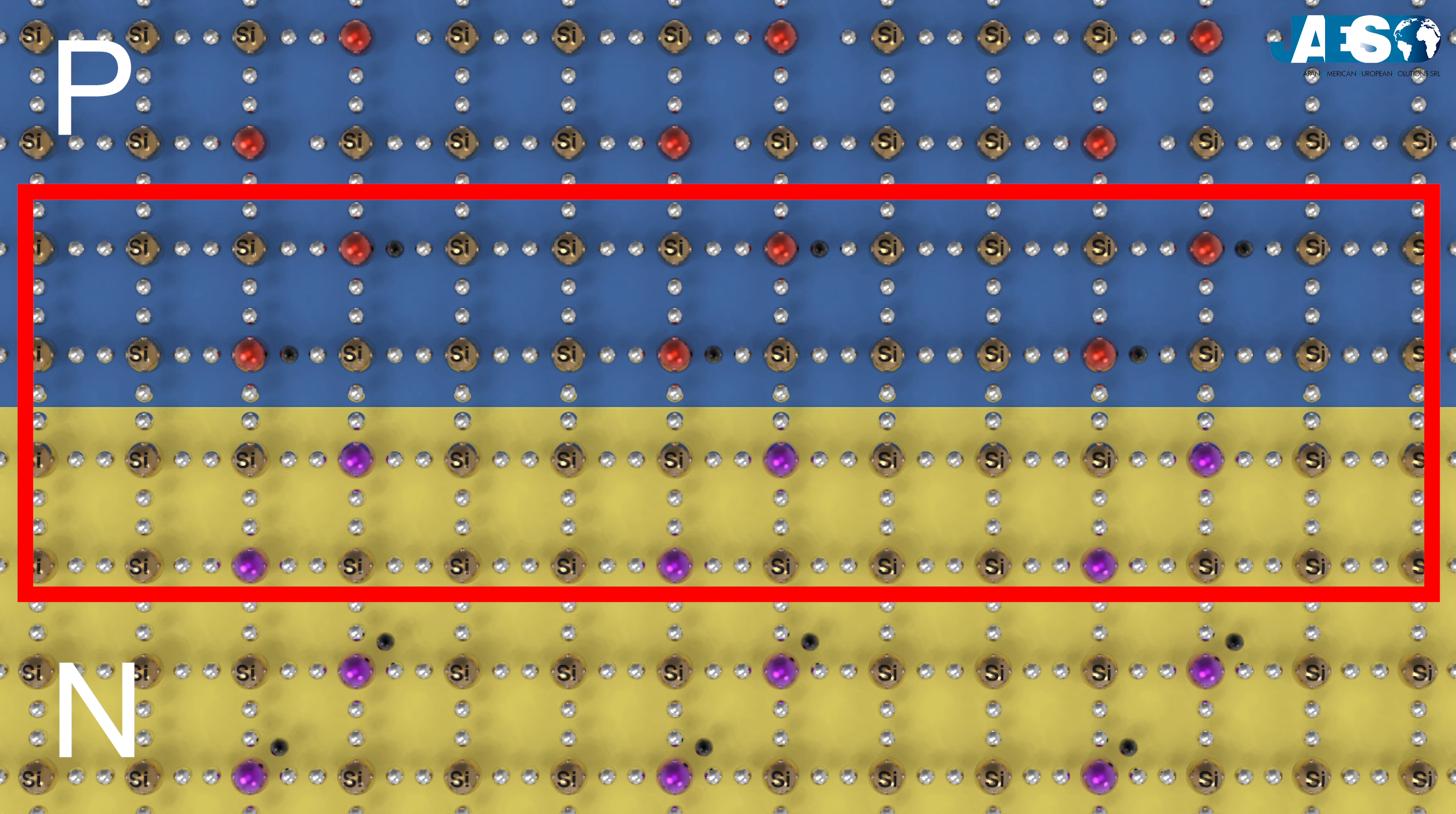Once we reach equilibrium, side N depletion region becomes positively charged, while side P becomes negatively charged. An electric field is therefore generated, which is a barrier for an additional exchange, and it behaves as an insulation.